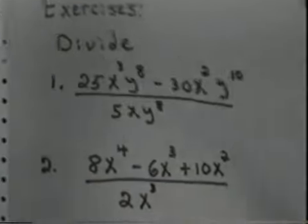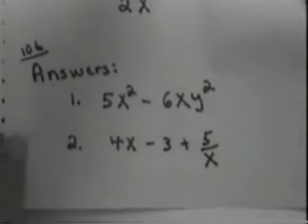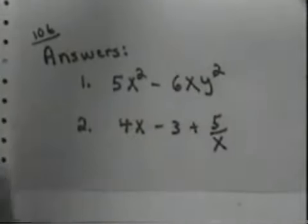Here come your answers. The answer to the first one is 5x squared subtract 6xy squared. The answer to the second one is 4x subtract 3 plus 5 over x.